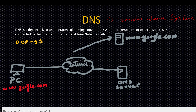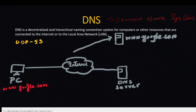For example, in this example we will reach Google.com website. If we reach Google.com, this is a map of public IP.